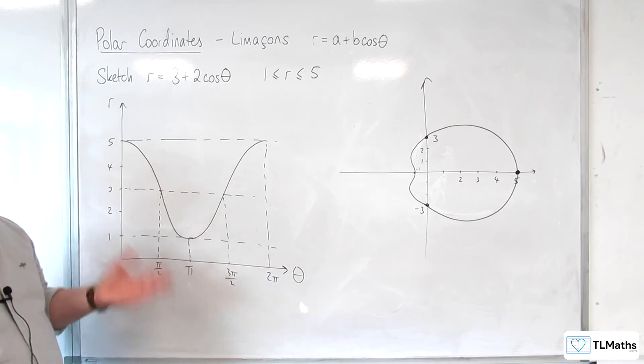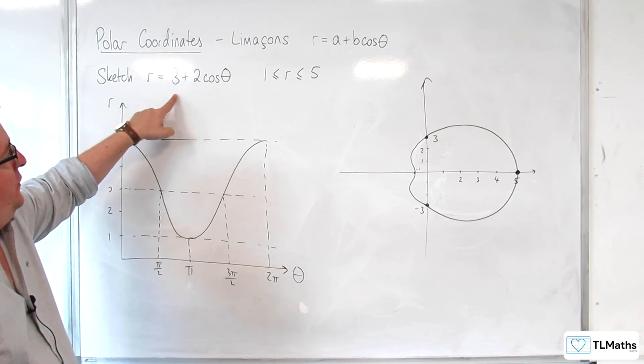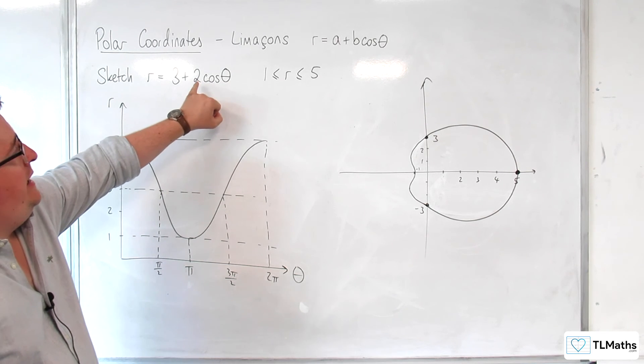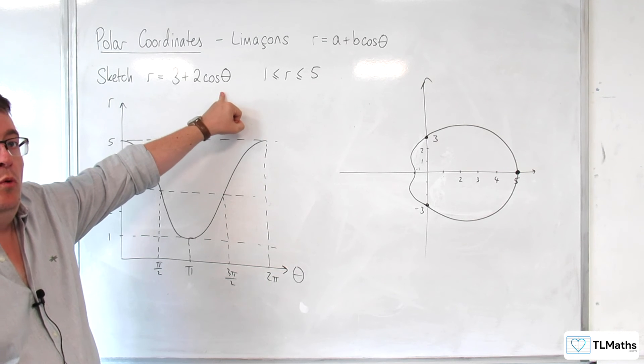So what I would definitely recommend is that try increasing A and seeing how that changes the shape of the curve. Now, the consequence is that as A increases, the B cosine theta becomes more and more negligible.